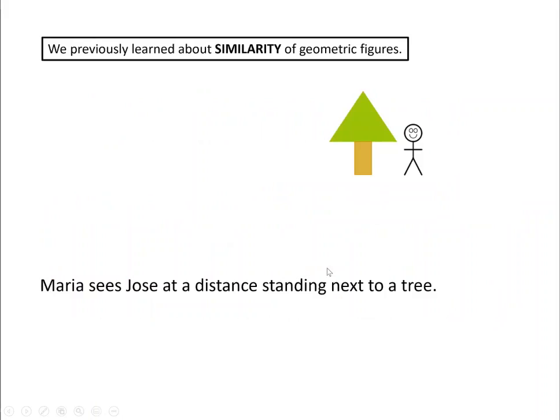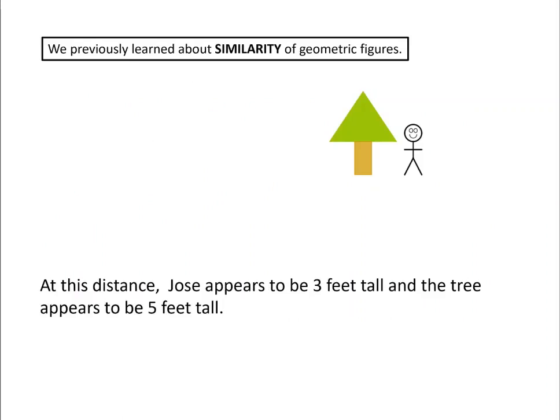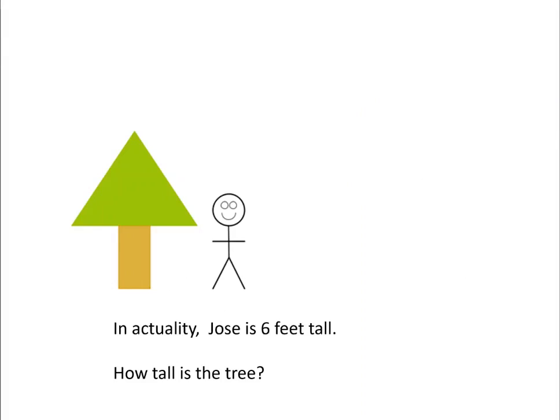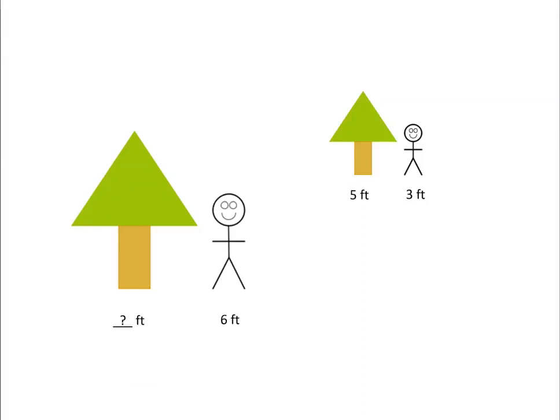Similar - what do you know about that? Maria sees Jose at a distance standing next to a tree. At this distance, Jose appears to be three feet tall and the tree appears to be five feet tall. Now in actuality, they are six feet tall. So how tall would you expect the tree to be? You could set up a proportion, but you can just think about it and know that yes, it is ten.